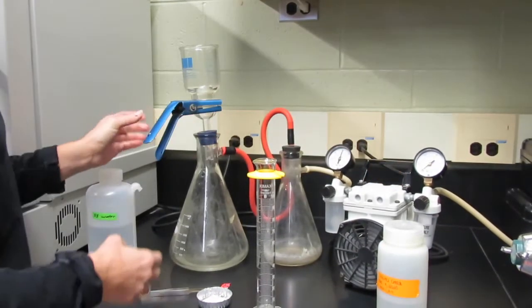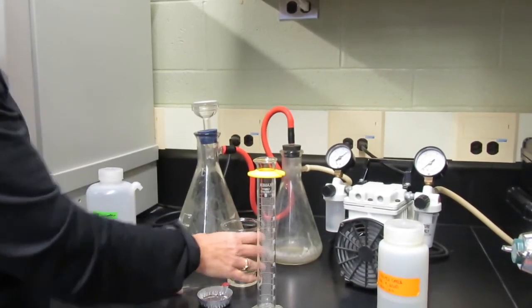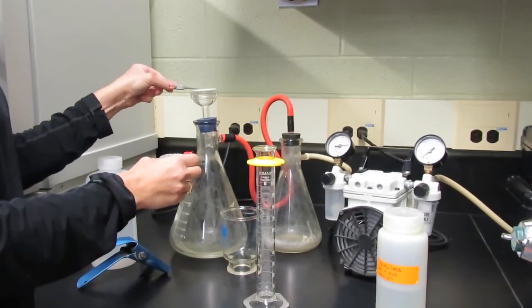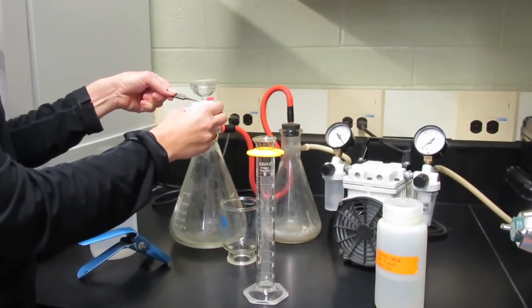Turn off the pump. Unclamp the funnel and using the tweezers carefully peel the filter off the base. Place the filter into the drying oven for one hour at 105 degrees celsius.